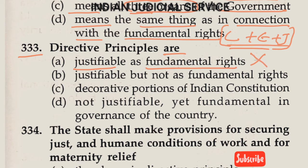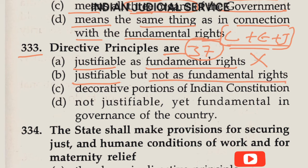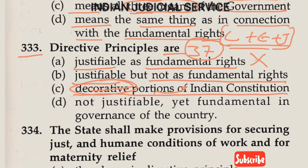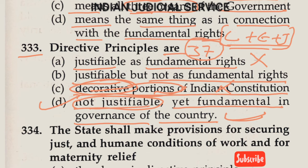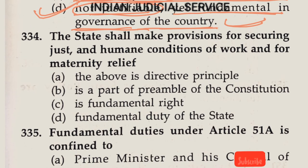Question Number 333: Directive Principles are — Option A: justiciable as Fundamental Rights (absolutely wrong — not justiciable, as clearly provided in Article 37); Option B: justiciable but not as Fundamental Rights; Option C: decorative portion of the constitution (wrong — they give direction to the state for welfare of people); Option D: not justiciable and yet fundamental in governance of the country. The answer is Option D — Directive Principles are not justiciable under Article 37, yet fundamental in governance of the country.